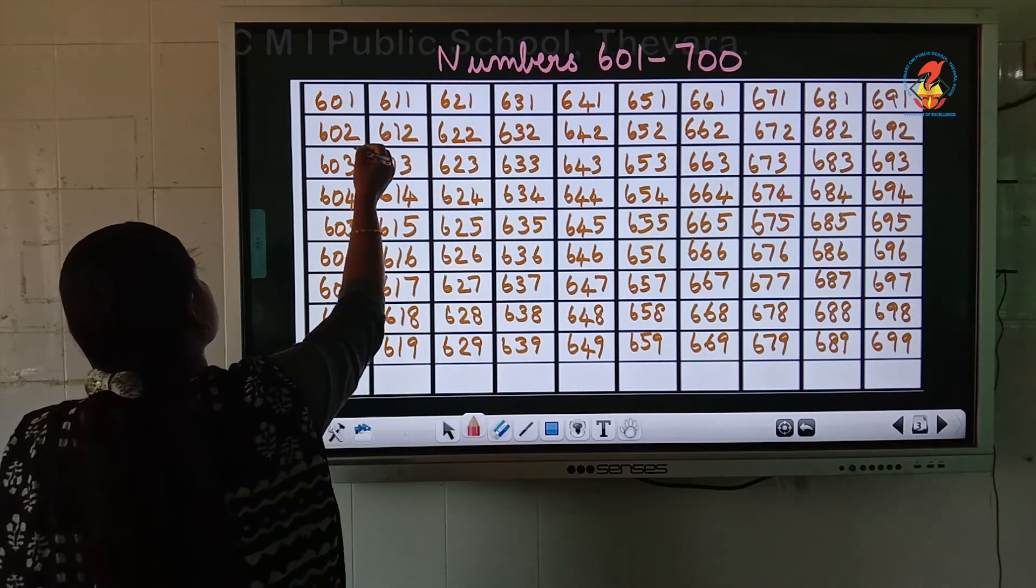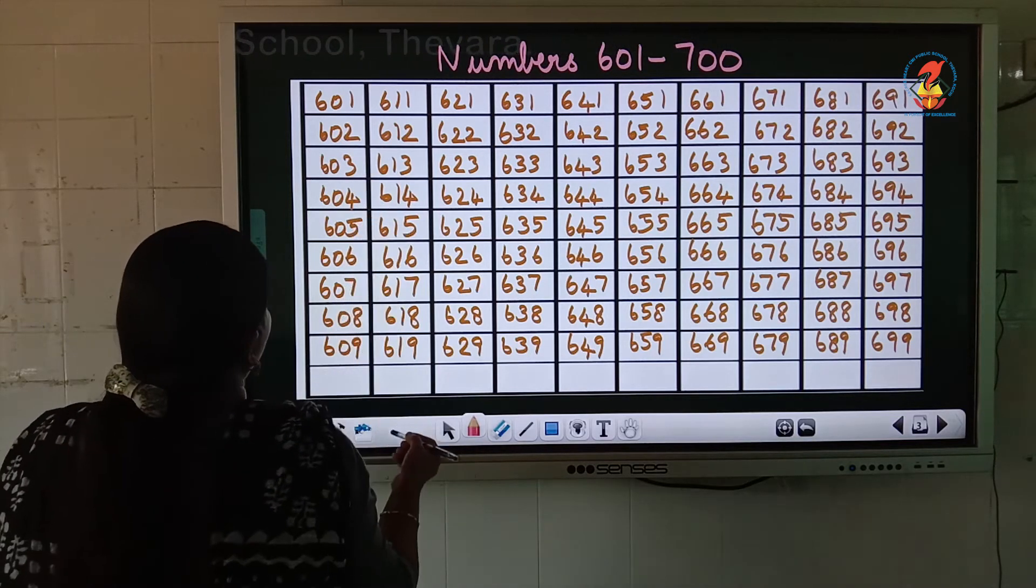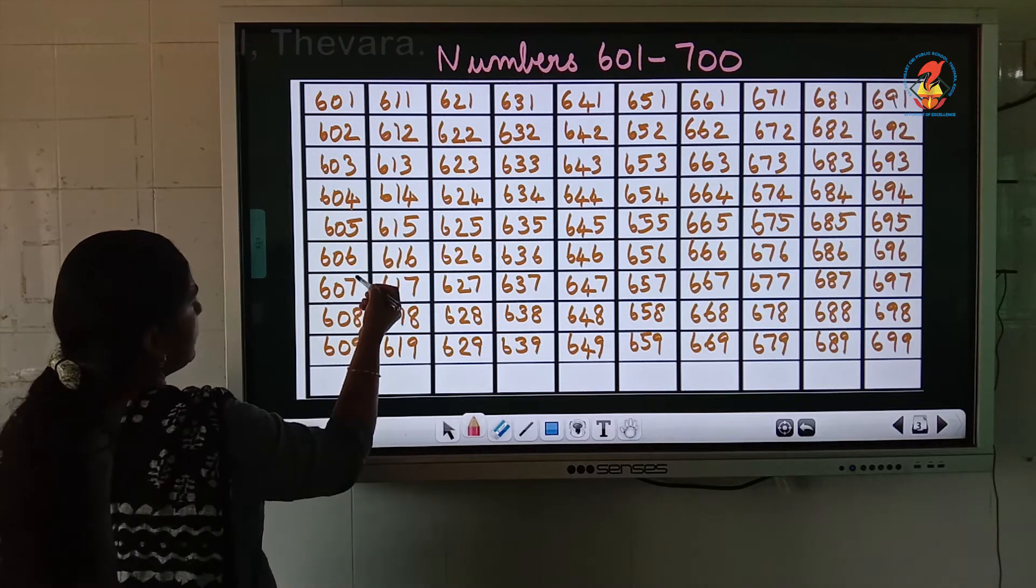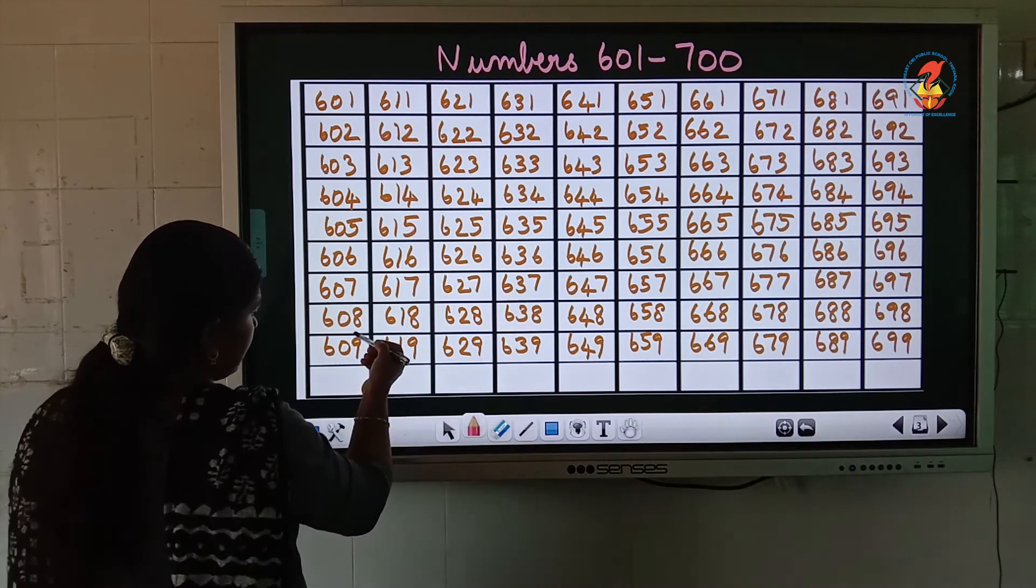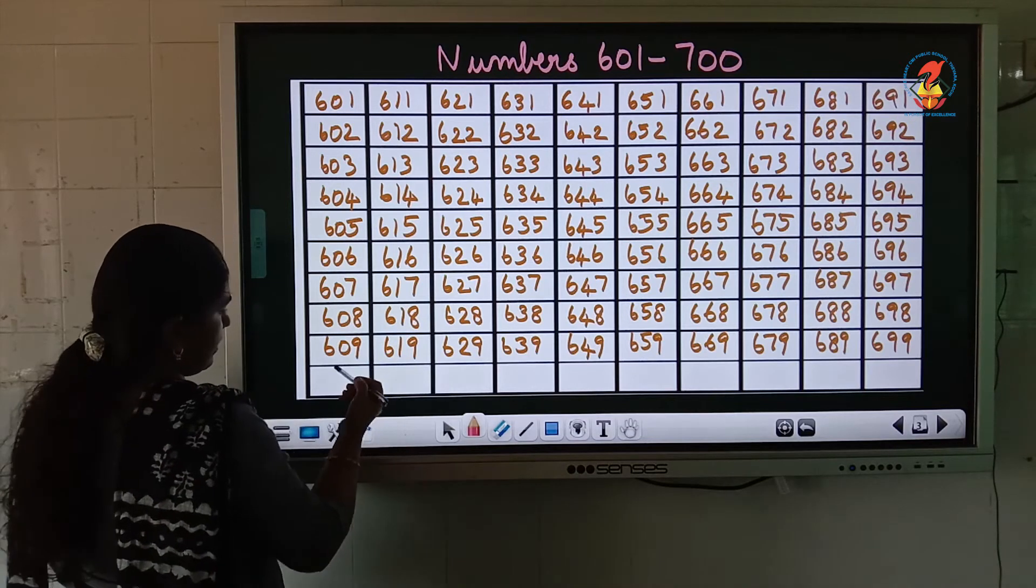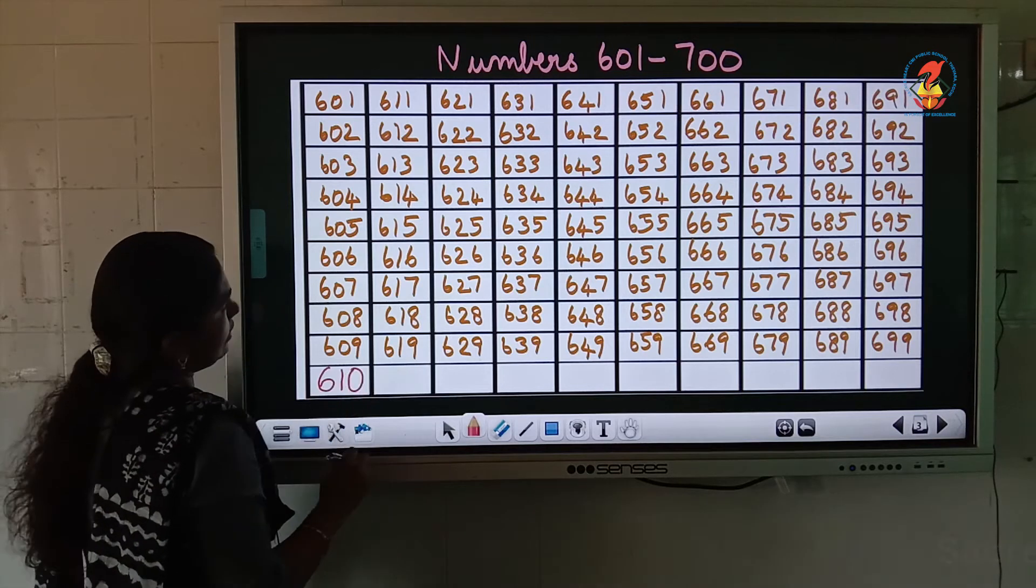Next is the numbers from 601 to 700. After 600, 601, 602, 603, 604, 605, 606, 607, 608, 609, then comes 610.